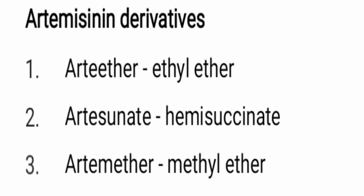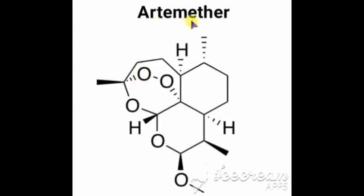Now let's look at the derivatives of artemisinin. Arteether is the ethyl ether of artemisinin. Artesunate is the hemi-succinate of artemisinin — 'S' stands for succinate. Artemether is the methyl ether of artemisinin — 'M' stands for methyl ether. Looking at the structure of artemether: it is the same as artemisinin, but the ketone is replaced by a methyl ether group, -OCH₃.